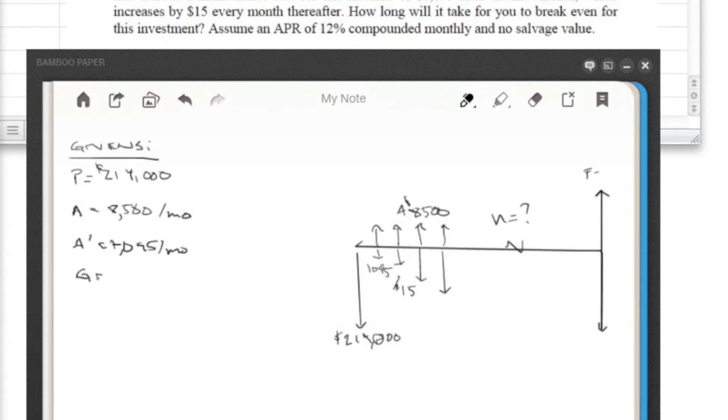G, which is how much this maintenance cost is increasing, is $15 per month. And we have our interest equal to 12% APR, which equals 1% monthly. Okay.